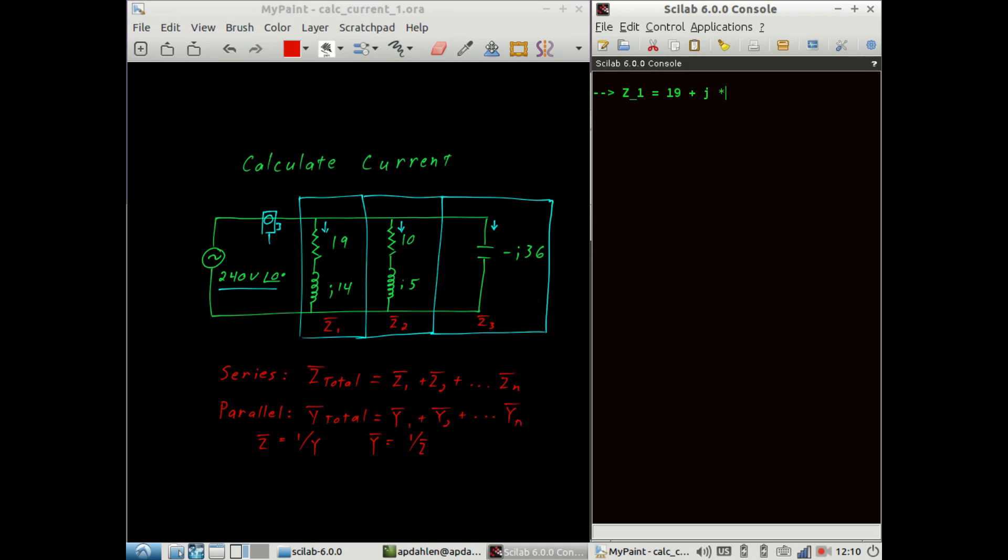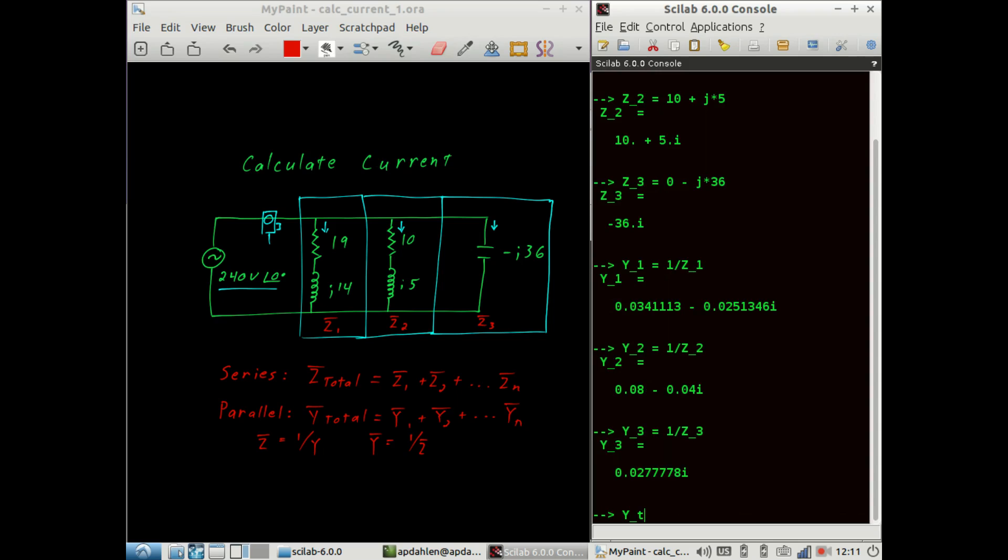Impedance 1, impedance 2, impedance 3. Now we find the admittance for each impedance. Now the total admittance is equal to the sum of the admittances.